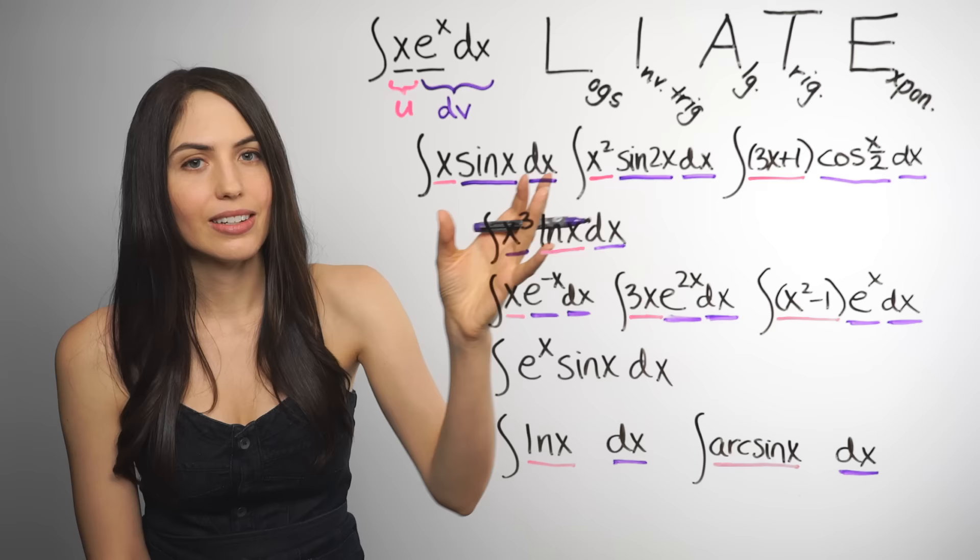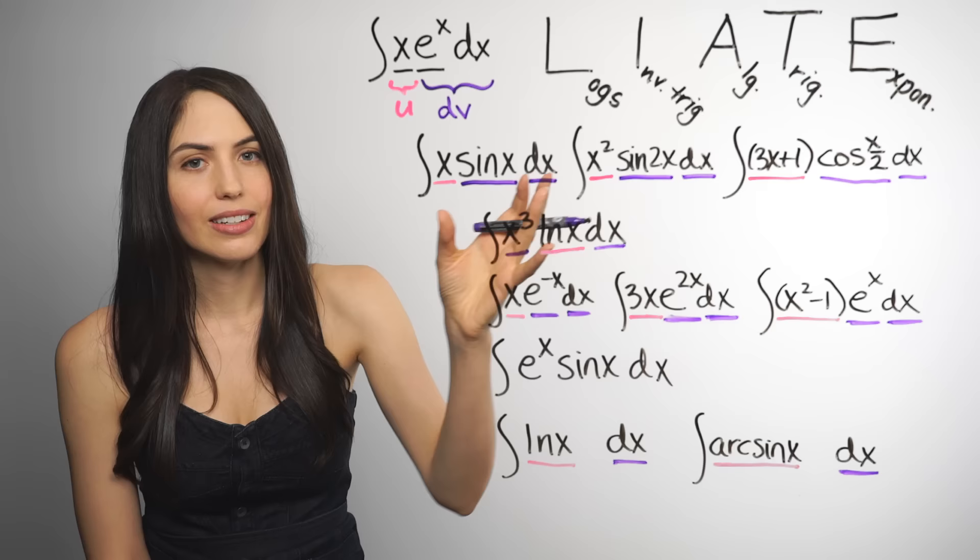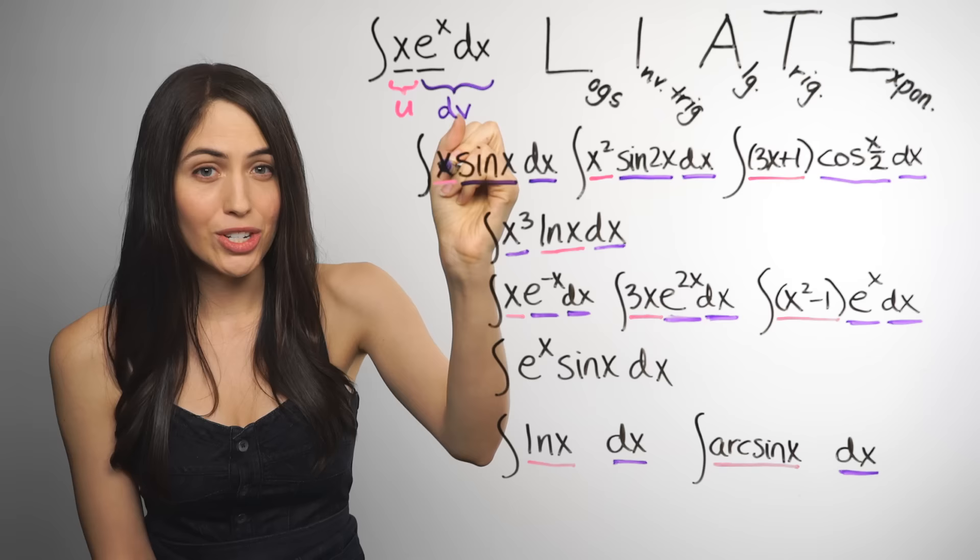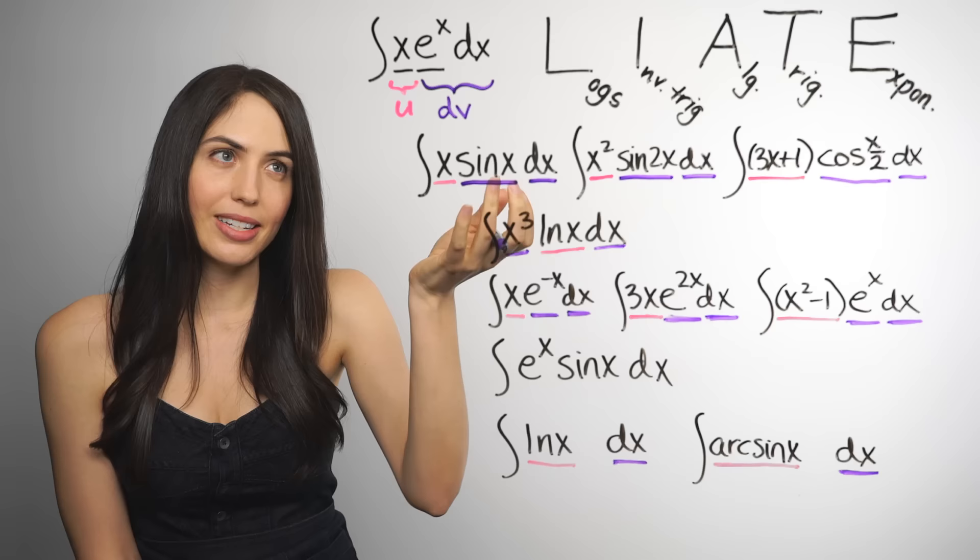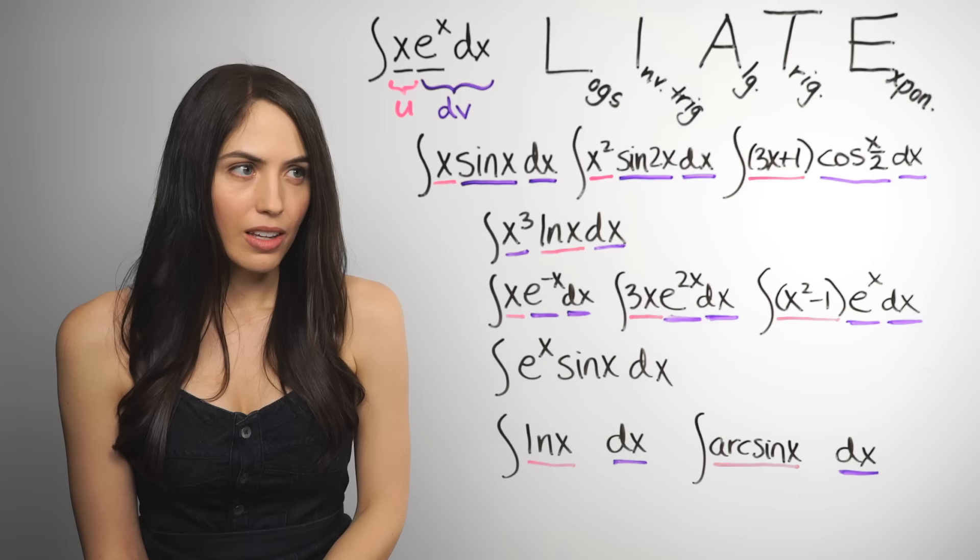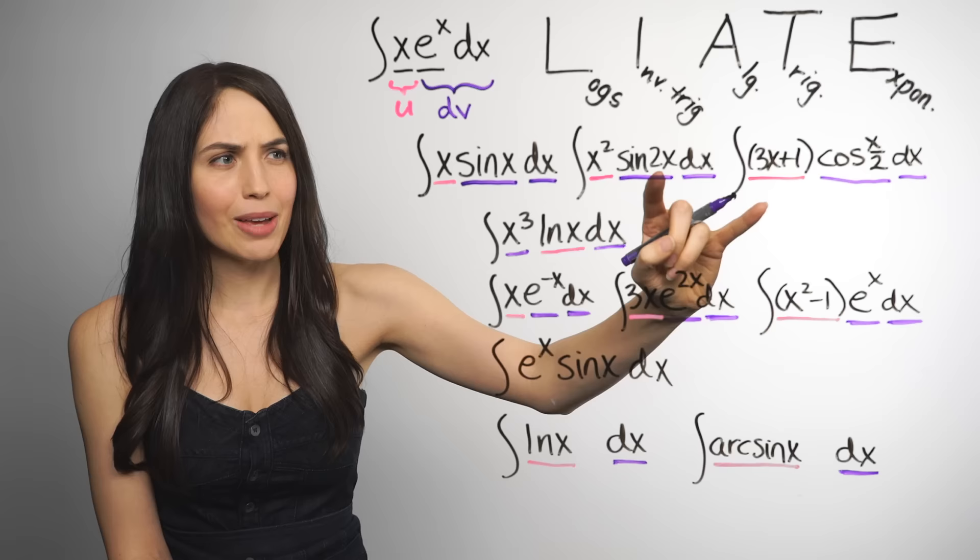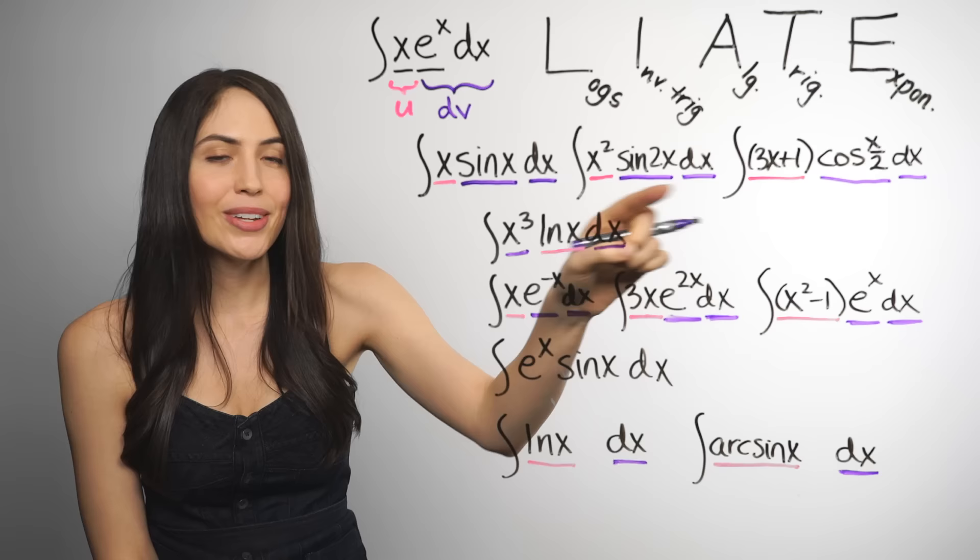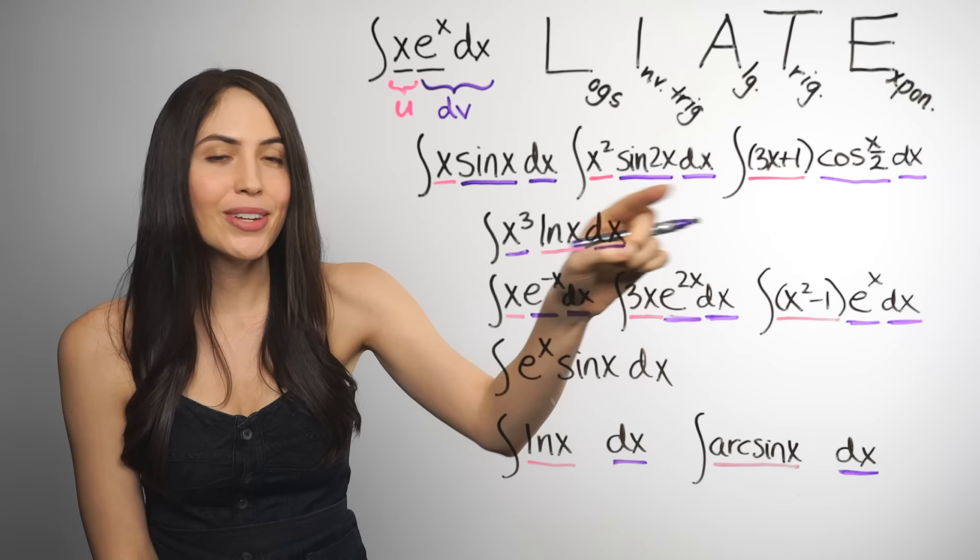By the way, if you didn't use a trick, it still works to think about it like how we were saying before. Whatever you pick for u, you want to get simpler when you take the derivative, which it does. And whatever you pick for dv, you don't want to get any more complicated when you integrate it. And this doesn't really. So that's why. But you can stick to the trick. These other two are kind of the same form. Algebraic and trig. Algebraic and trig. And you can see that the algebraics won out. They got placed as u because they appear first in our trick. And then these are dv. Only thing I will say is that in this one, you'll need to do integration by parts twice. Yeah, I know.